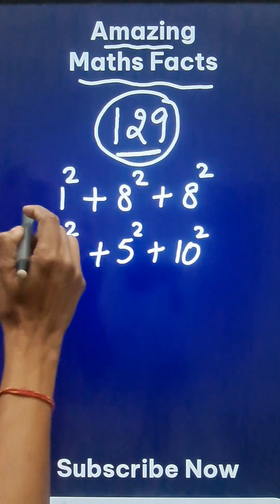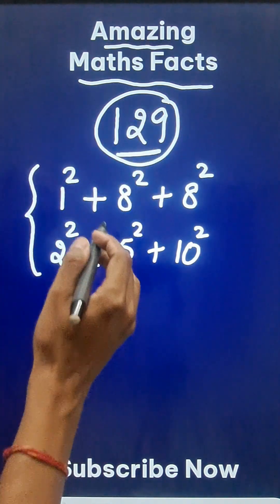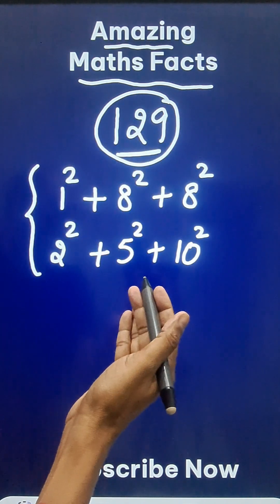So I think you can obtain 129 using the sum of squares of three numbers in two different ways. Is that all? Not at all.